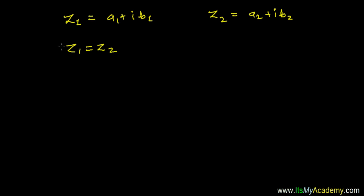So what is that condition when Z1 and Z2, the two complex numbers, get equal? I'm just trying to find out the conditions. a1 plus i b1 equals to a2 plus i b2.